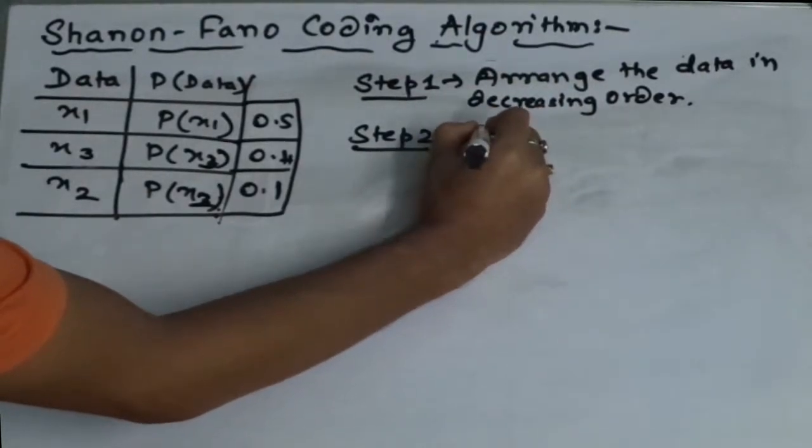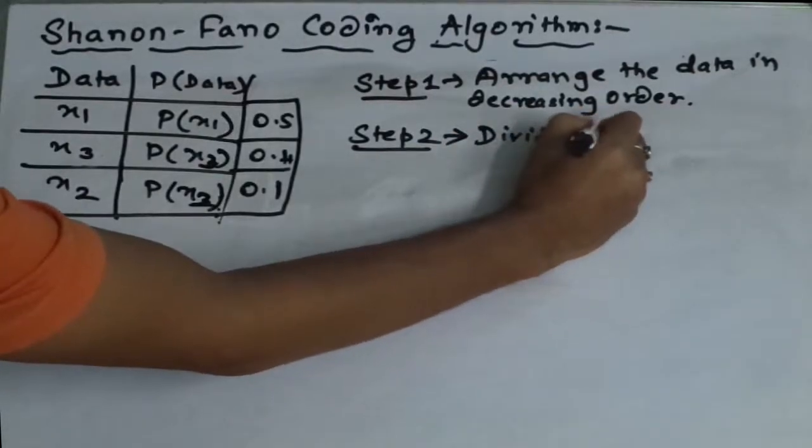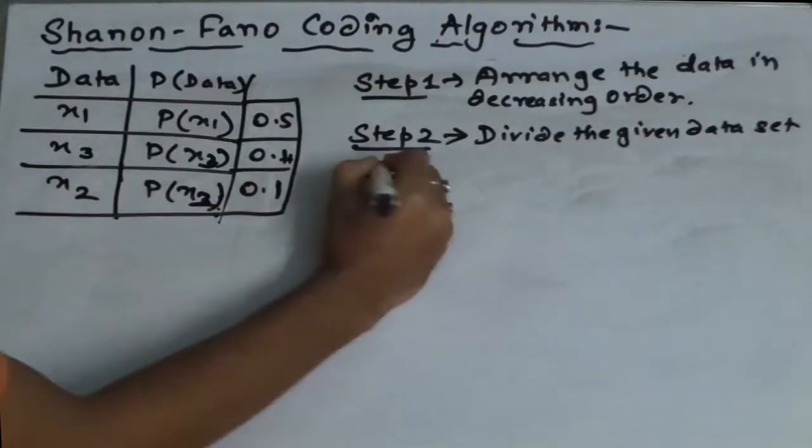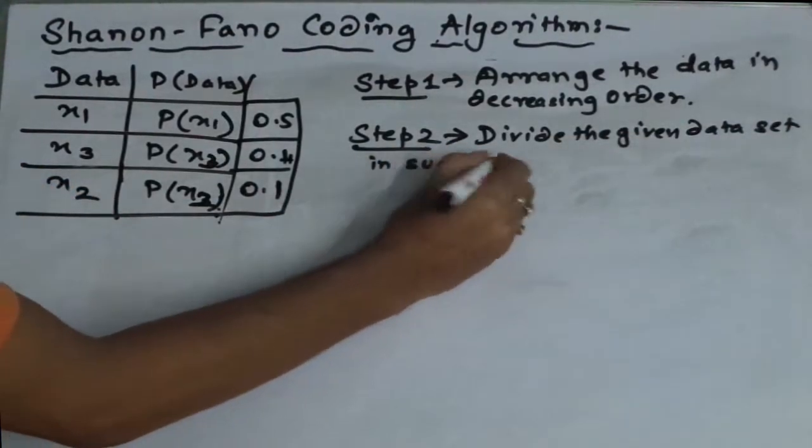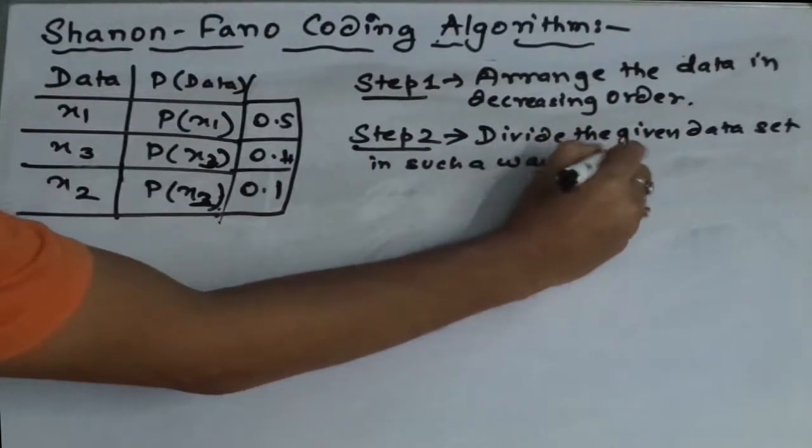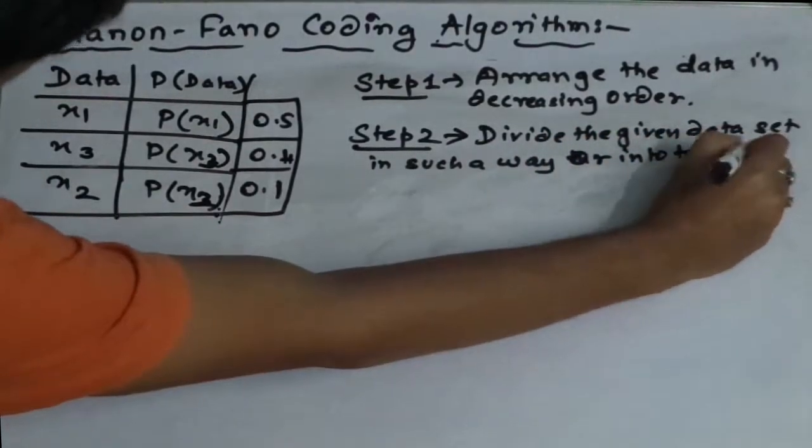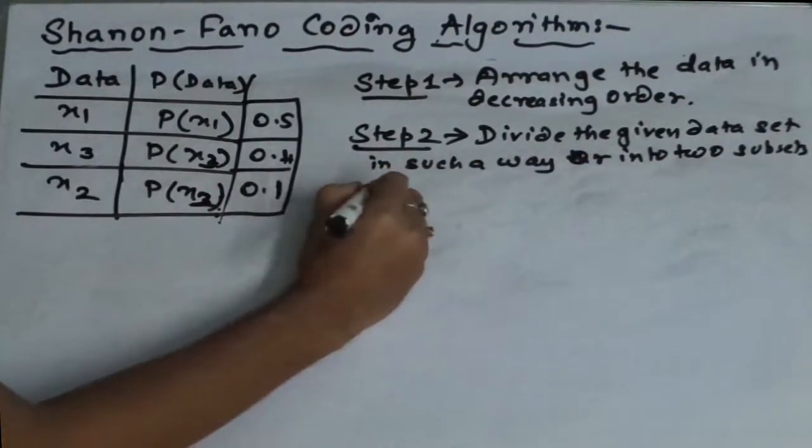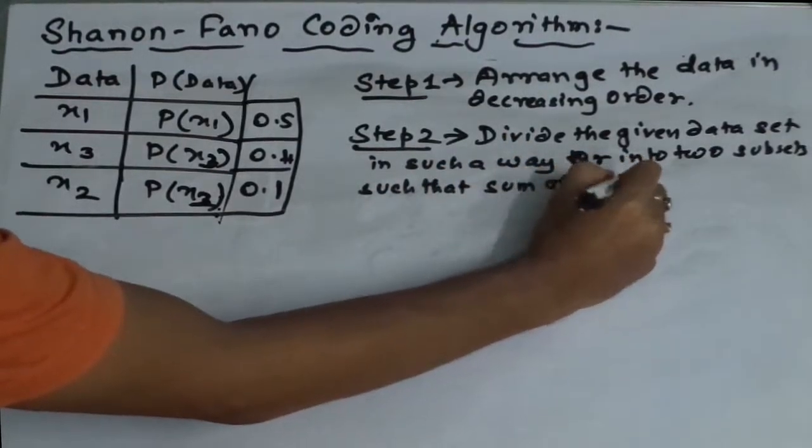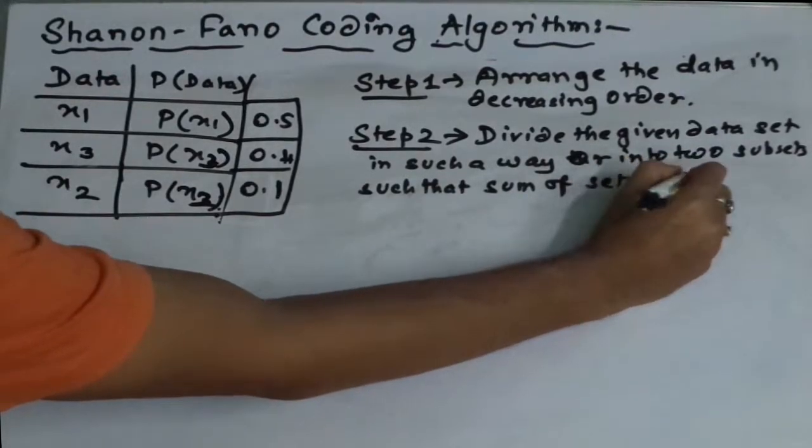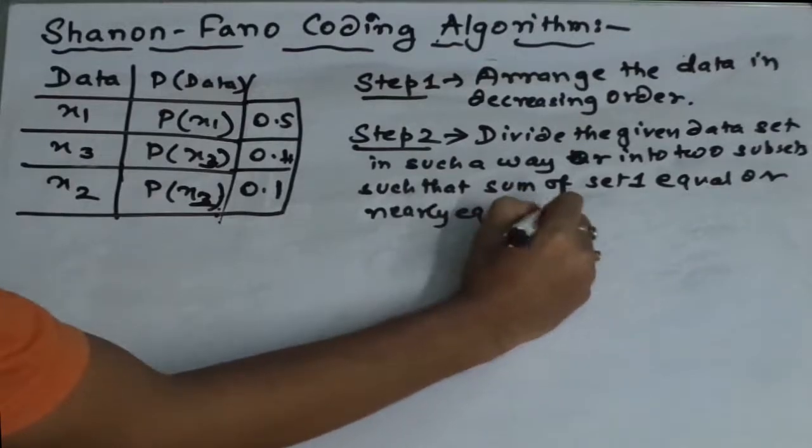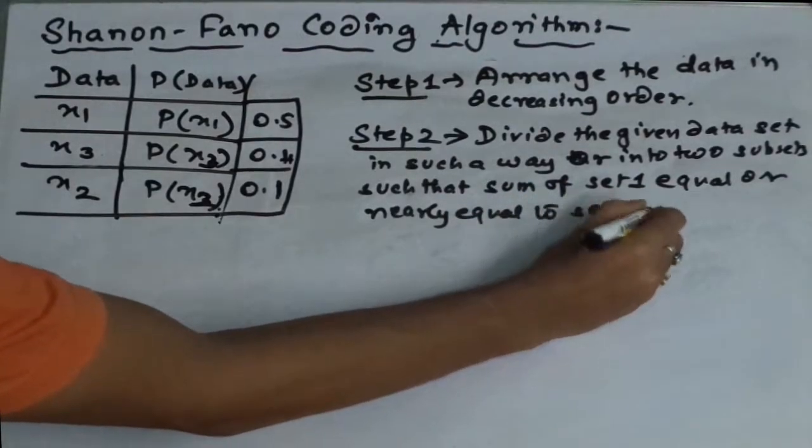What we have to do? We have to divide the given data set into two subsets such that sum of set one is equal or nearly equal to set two.